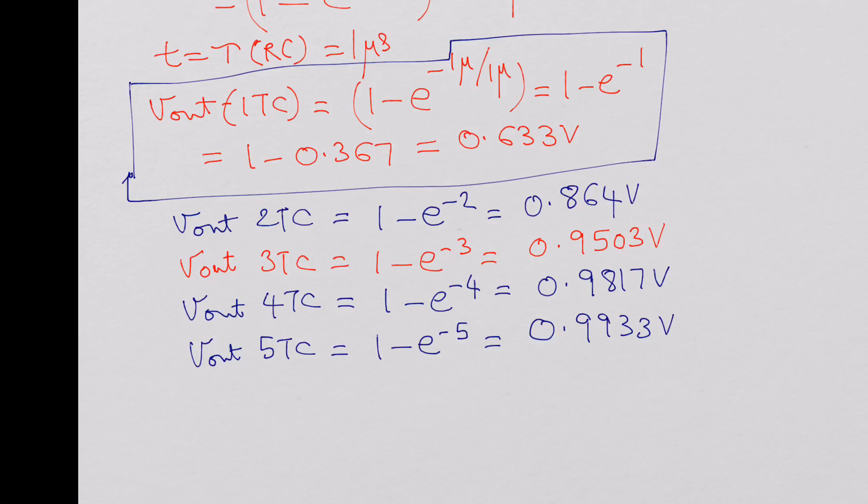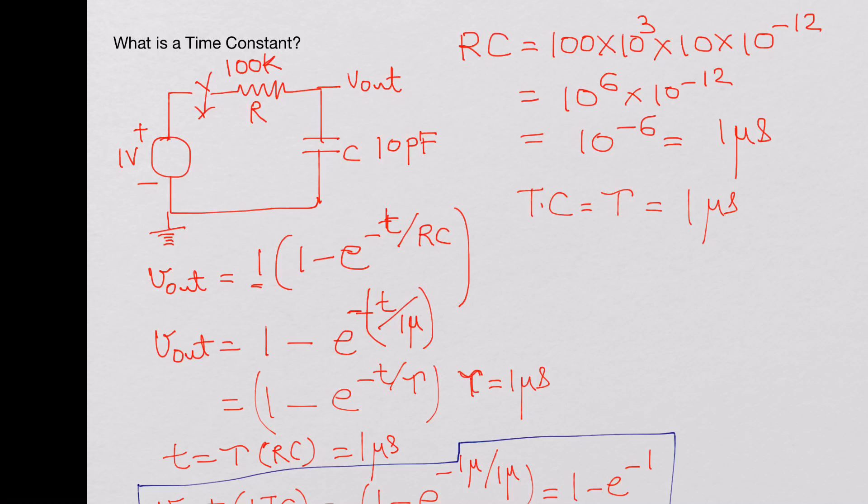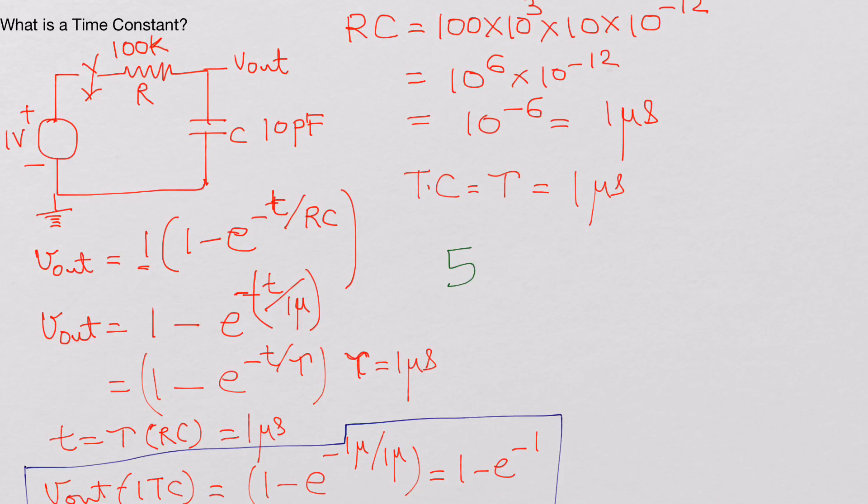So what we say is we need at least 5 time constants for the capacitor to be charged completely. So 5 time constants or 5 tau.